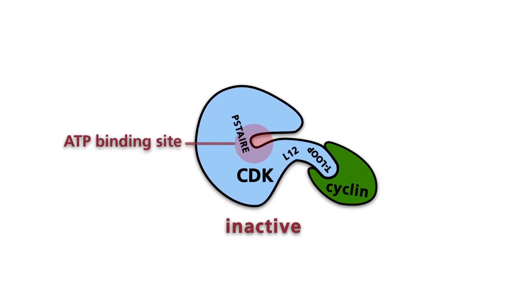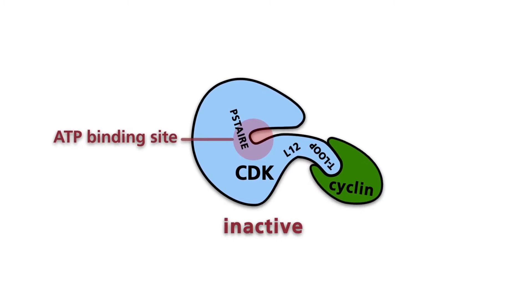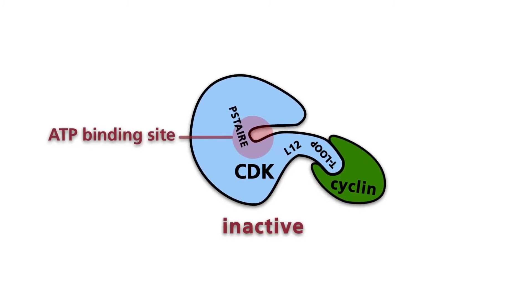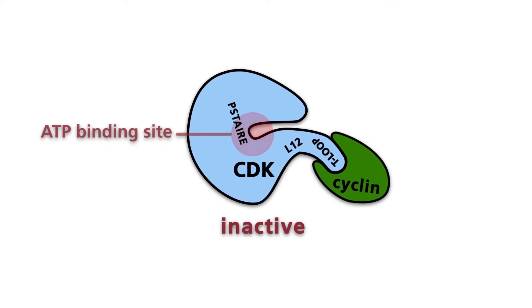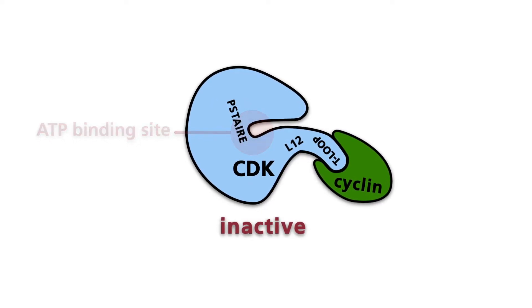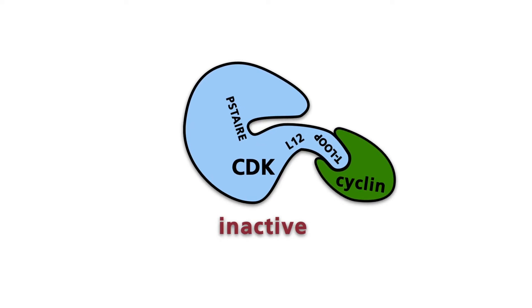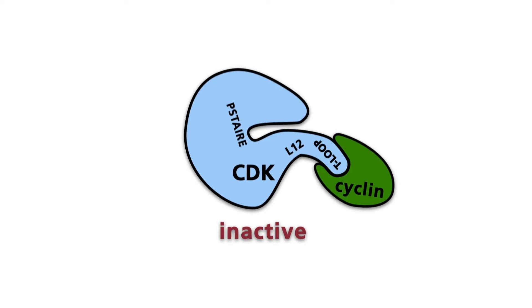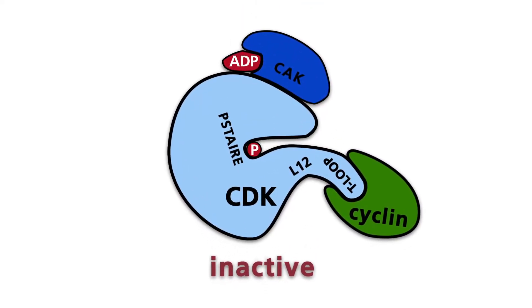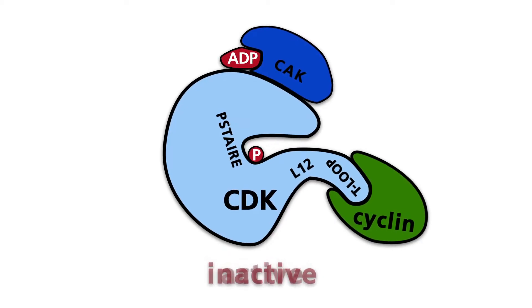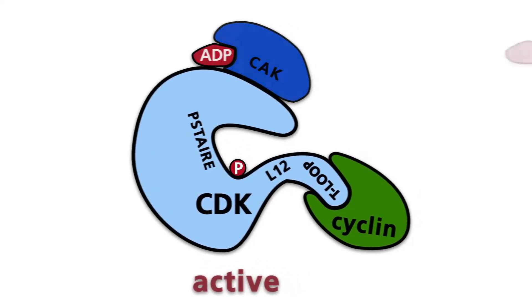Additionally, the P-stair helix changes position, leading to the movement of several amino acid residues within the active site. This movement facilitates further activation of the CDK by a CDK-activating kinase, or CAK. CAKs are able to phosphorylate several different CDK residues, leading to a wider opening of the cleft, which makes the active site more accessible for ATP.